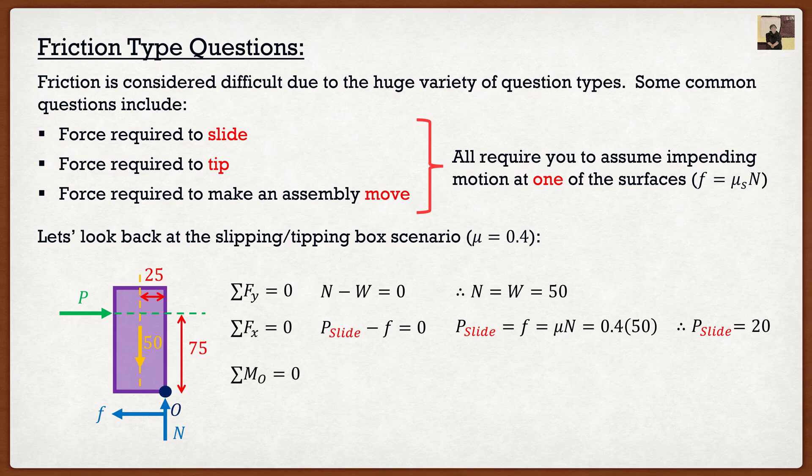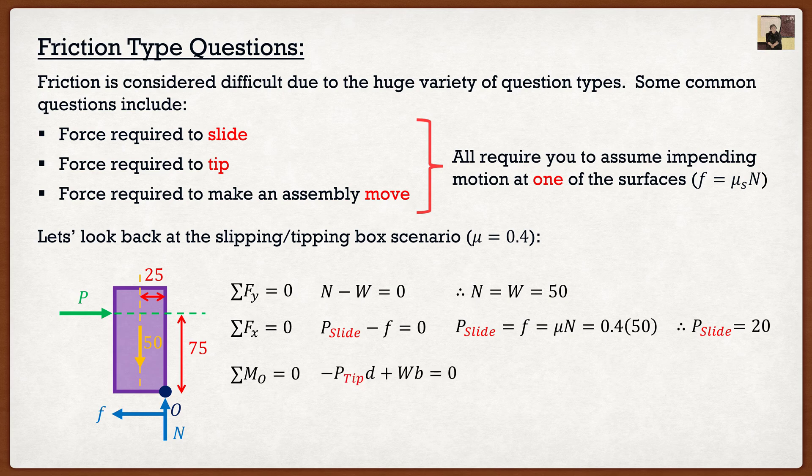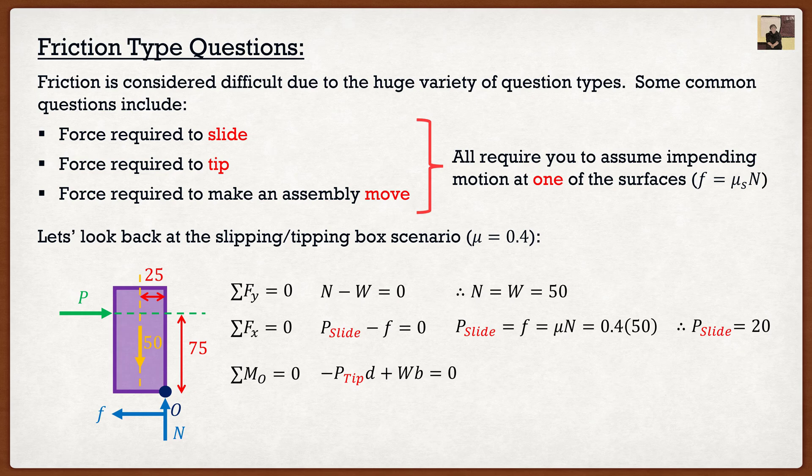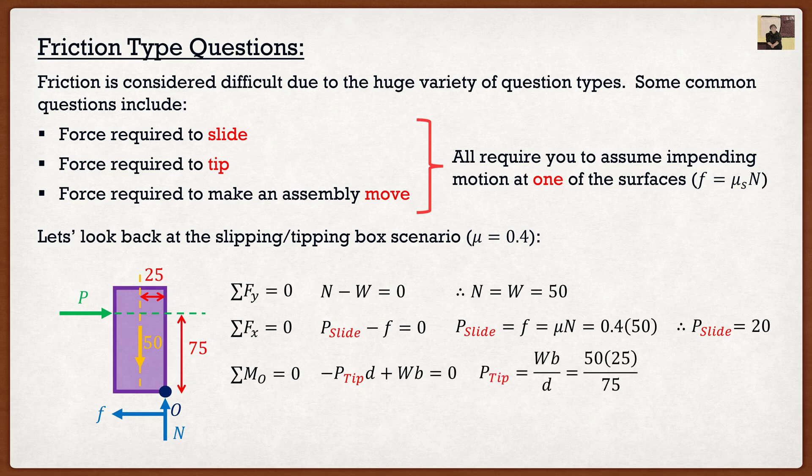So if I were to go summation of the moments about point O, we see that we have our P force times that distance d, the 75, plus our weight times b, that kind of thickness to the midpoint of our box. And if we were to rearrange this, we can find that the P required to make this box tip is 16.7.